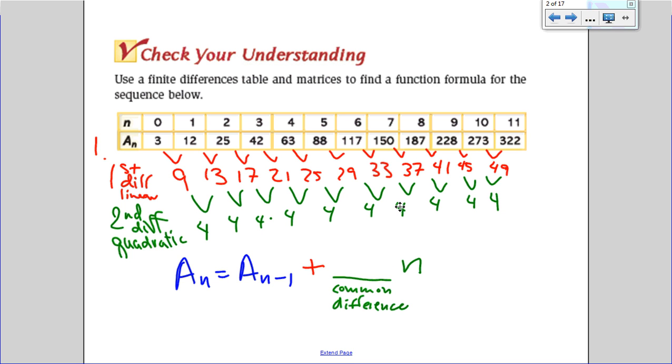Now our common difference is a number we get every single time in our second difference if it's a quadratic. So in this case, I've got 4, 4, 4, 4, 4 all the way through. It's going to be a sub n minus 1 plus 4n.